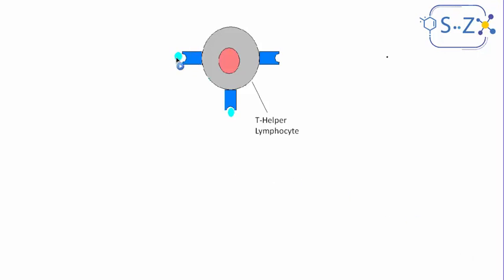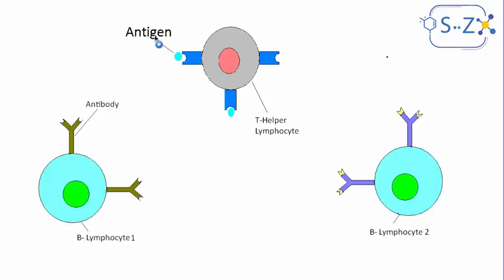it will study the antigen and search for a specific antibody or B lymphocyte to act on it. We have many B lymphocytes. For simplicity I only showed you two. The T helper has to choose which one of these B lymphocytes will be the one to fight the invading pathogen or non-self.